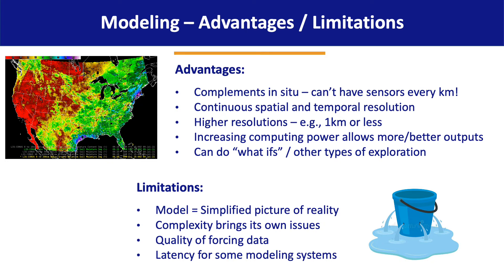At the same time there are some limitations to modeling, the most basic being that a model is just a simplified version of reality — as illustrated by the leaky bucket on the right representing our hydrologic cycle. Modelers are making their models more comprehensive and complex over time, but complexity brings its own issues in terms of bias and error correction. There's also a question about the quality of forcing data, as atmospheric dynamics remain complex and not fully understood. In some cases modeling systems have latency, as modelers check outputs for quality control and quality assurance, which delays how quickly we can get model results.